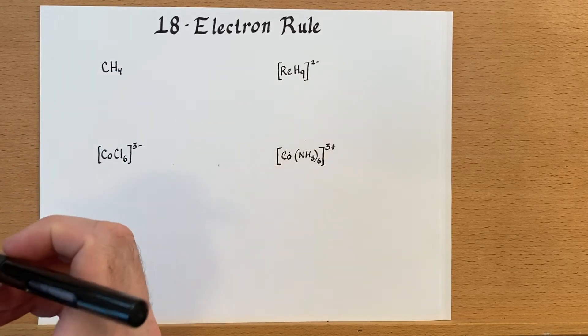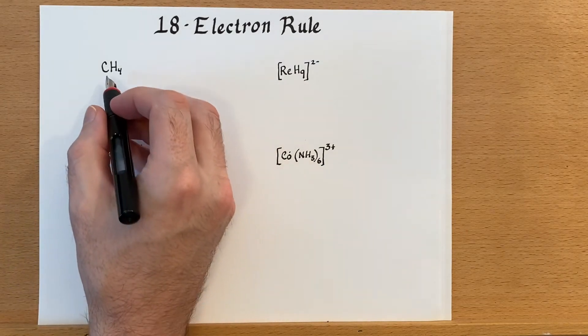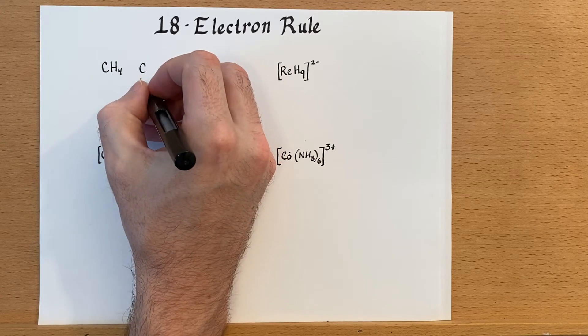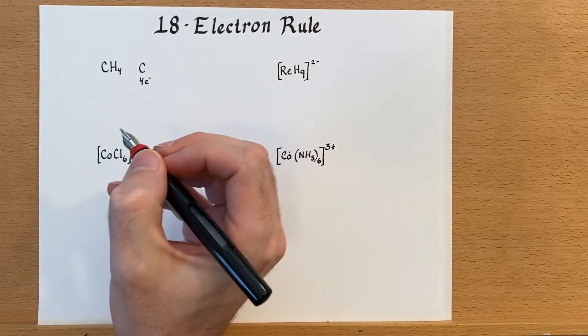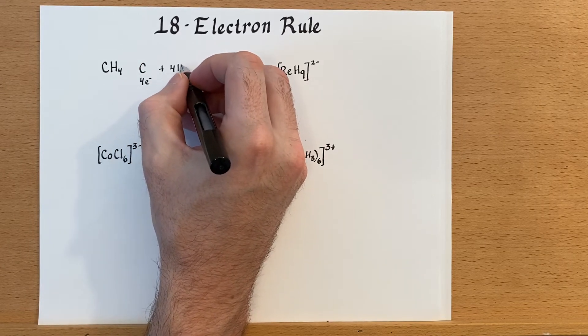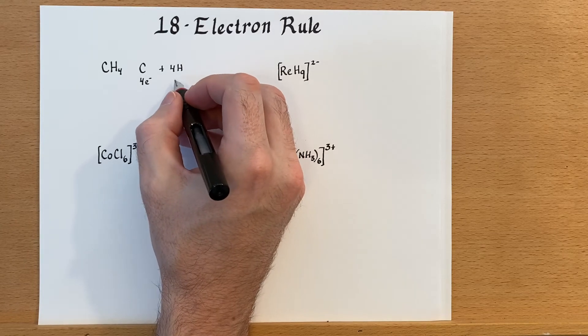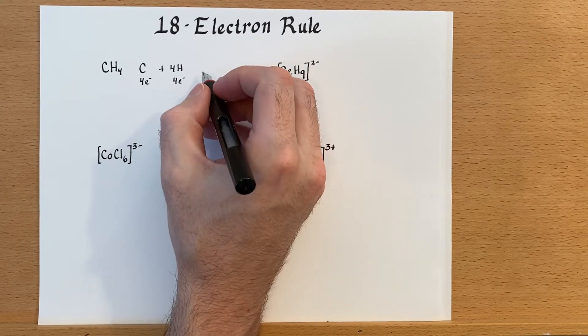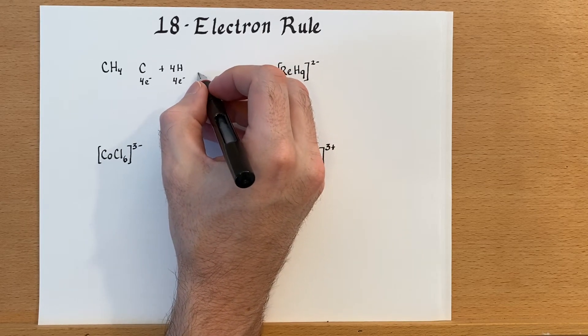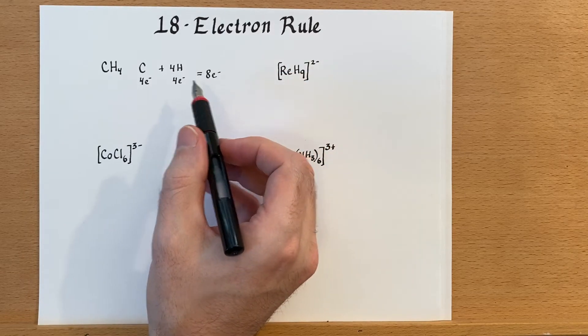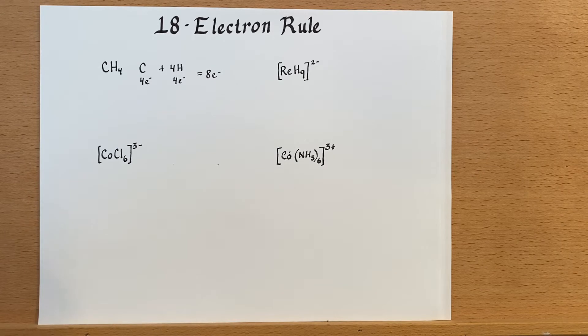So we have carbon, and carbon has four electrons. And we have four hydrogens, and each one of those has one electron, so four times one is four electrons. And if we add those up, that's eight electrons, and carbon likes to obey the octet rule.